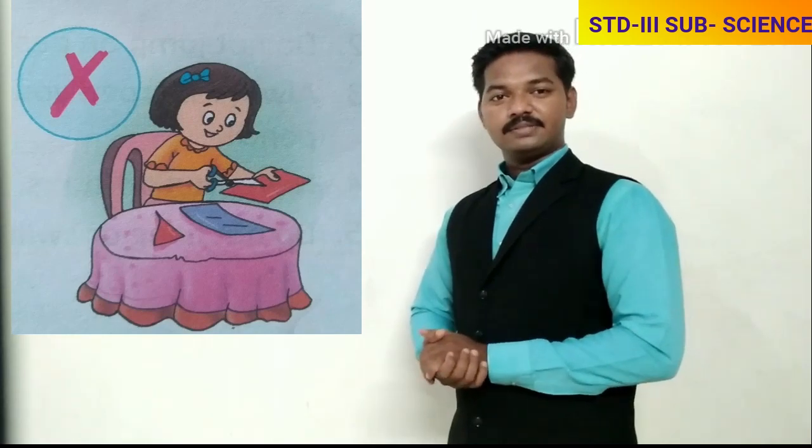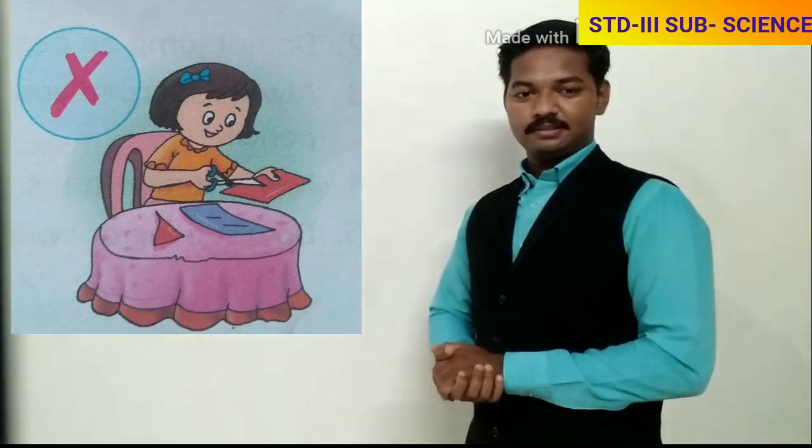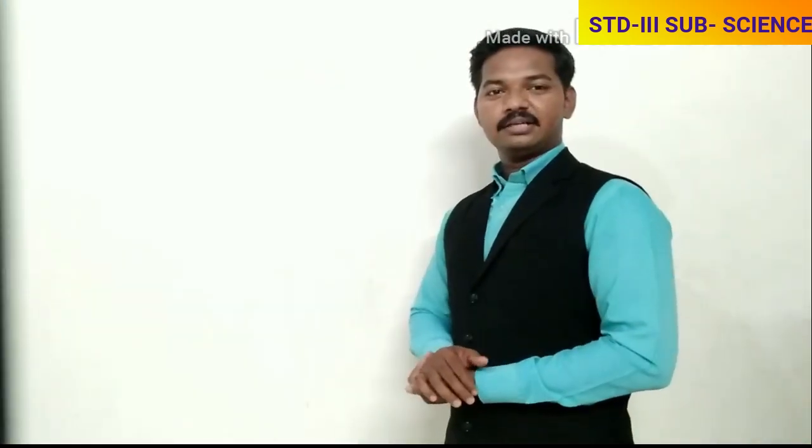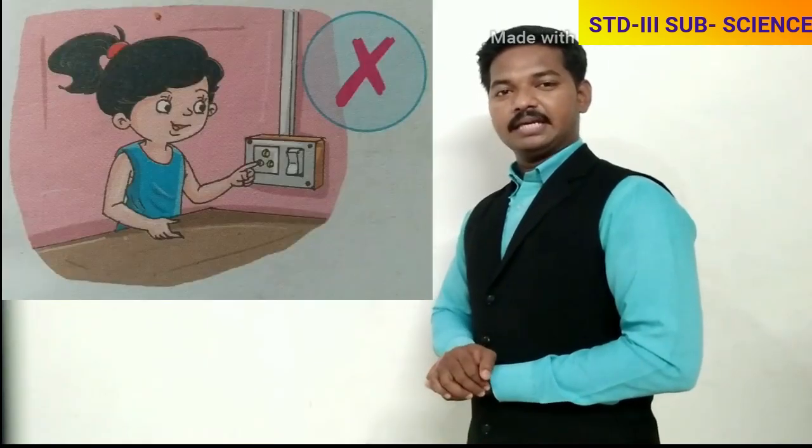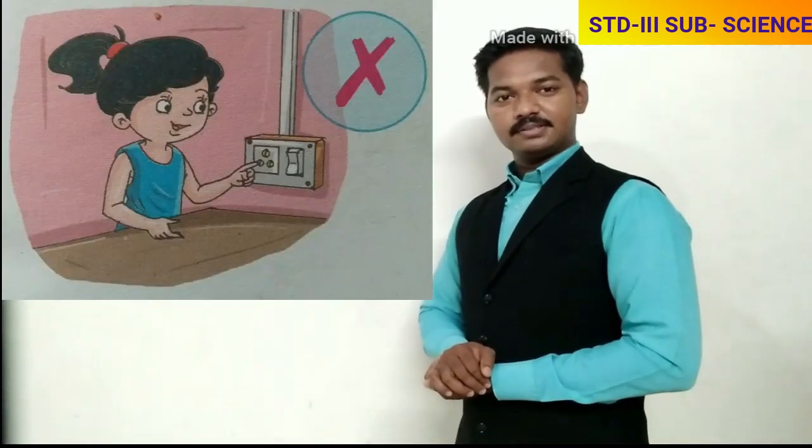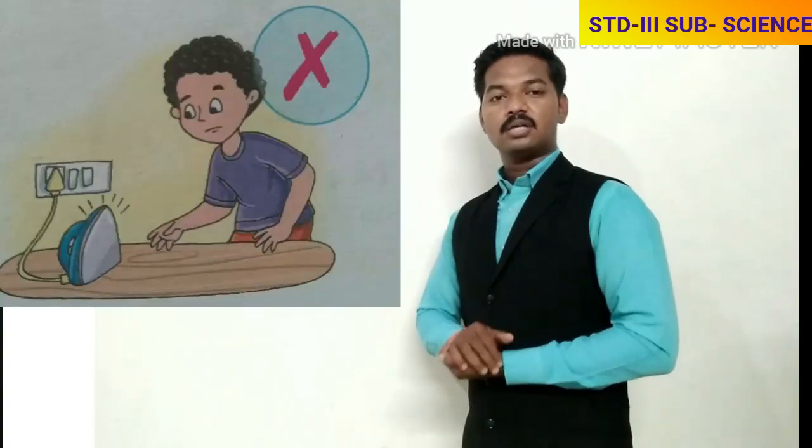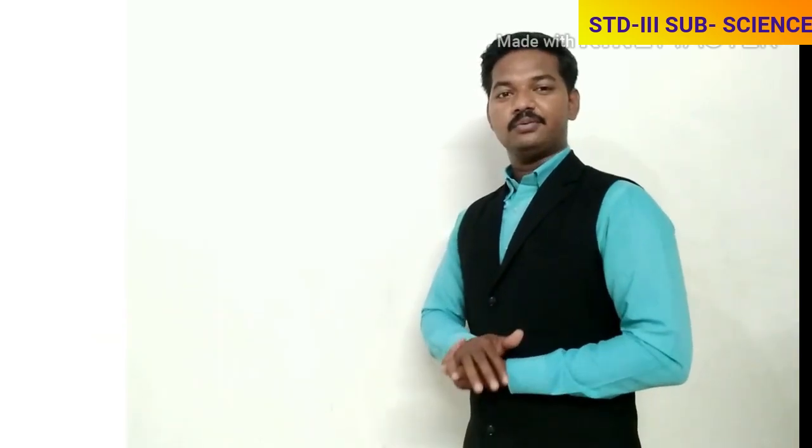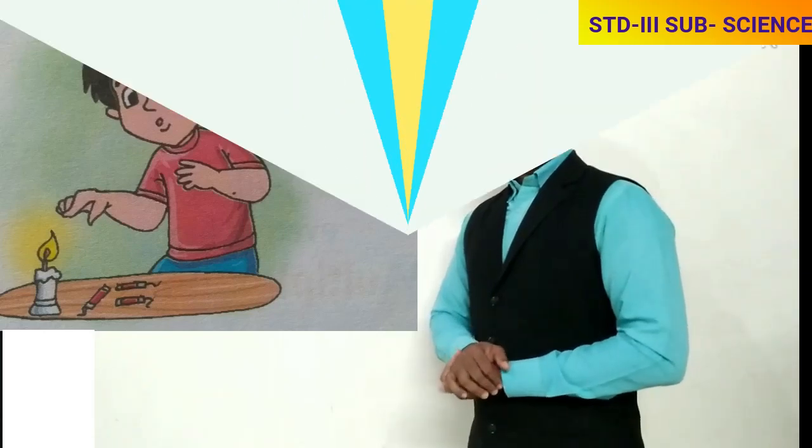like knives, blades, and scissors. They can cut your skin. Use them only in the presence of an adult. Number two: do not touch electrical wires, plugs, sockets, hot irons, or heaters. They can give you an electric shock.